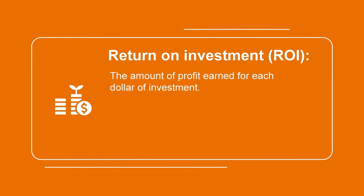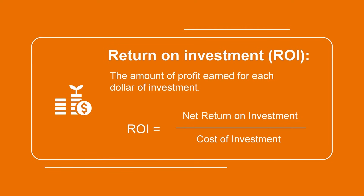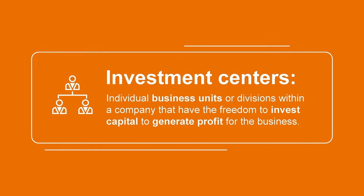One of the most common ways managers and investors measure the actual performance of investment centers is to calculate the division's return on investment, which is the amount of profit earned for each dollar of investment. The generic formula for return on investment is to take the net return generated from the investment and divide it by the original cost of the investment and then express this as a percentage. For example, if an investor received a return of $10,000 on a $100,000 investment, the return on investment would be 10%. This concept can be applied to divisions within a company that are structured as investment centers.